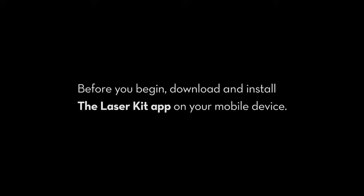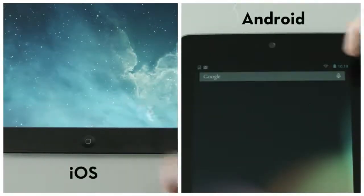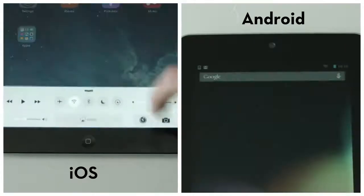Before you begin, download and install the LaserKit app on your mobile device. To get started, make sure that Bluetooth is enabled on the device that is running the LaserKit app.